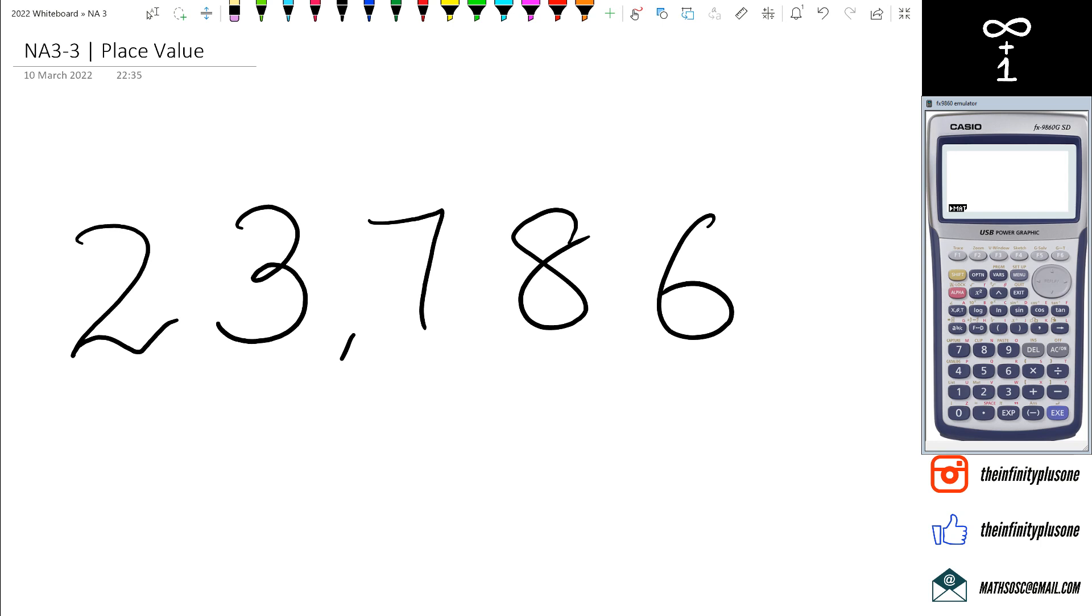Hey guys, in this session we're going to quickly cover place value just up to these five columns here. The number that we've got here is 23,786. So a couple of things to remember is that we've got certain columns.